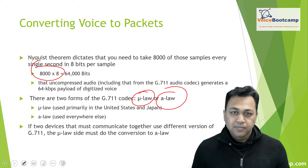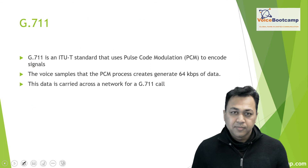If two devices are communicating using different versions — for example, someone from Europe calling someone in North America — the North American phone has to be converted to A-law in order for the communication to take place. A-law will be the dictating standard, requiring Mu-law to convert into A-law for the communication to be established. G.711, known as the toll quality codec or uncompressed codec, is an ITU standard called Pulse Code Modulation, or PCM. The voice sample that PCM processes creates 64 kilobits of data carried across the network. So 64K is your voice payload, not including layer 2 and layer 3 headers.